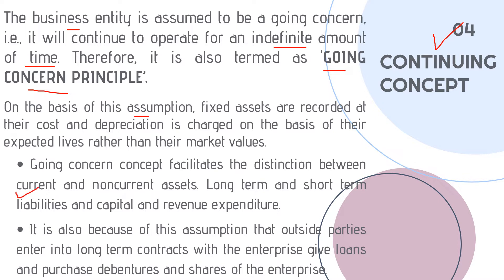Under the going concern concept, current assets are those which will be consumed within a year, and non-current assets are those which will last for more than one year. This allows us to categorize liabilities as long-term and short-term, and expenditures as capital and revenue, which is why outside parties are willing to enter into contracts.